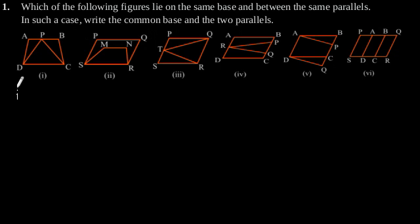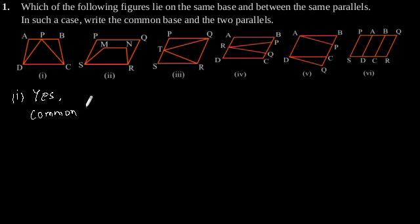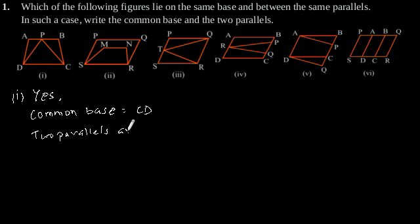here we can see that the trapezium ABCD and triangle PCD have a common base that is CD, and both are lying between the same parallel lines AB and CD. So the answer is yes. The common base is CD and the two parallels are AB and CD.